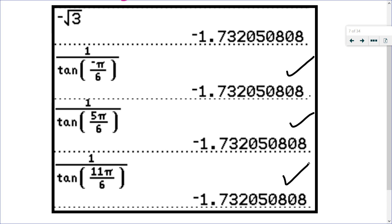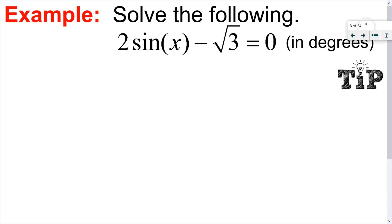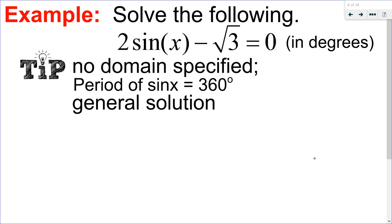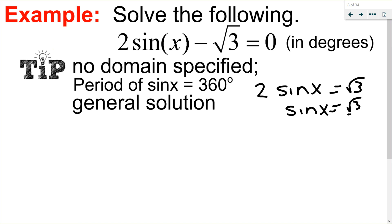Let's try this one: solve 2sin(x) - √3 = 0 in degrees. Notice there is no domain specified, so no domain specified means I'm looking at a general solution. The period of sin(x) is 360 degrees, so I'm going to find all solutions from 0 to 360 and then add on multiples of the period. Isolating: 2sin(x), add √3 to both sides, divide both sides by 2, and I get sin(x) = √3/2.